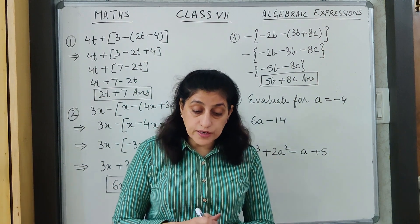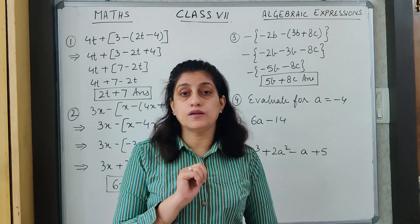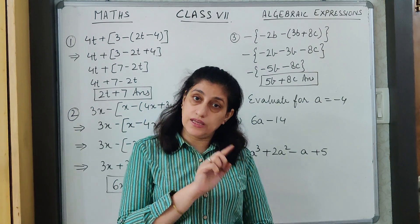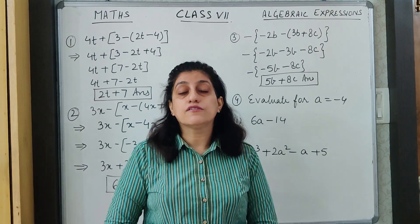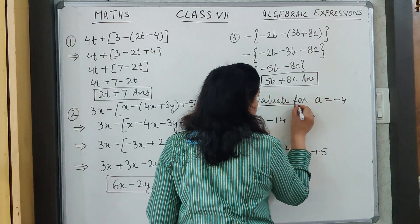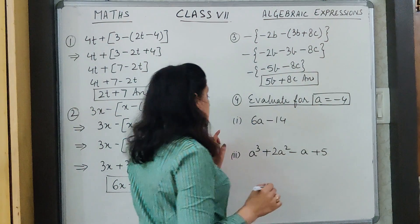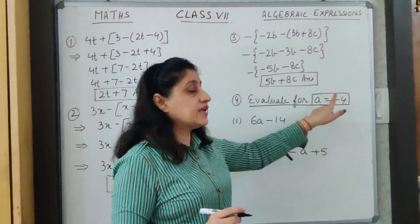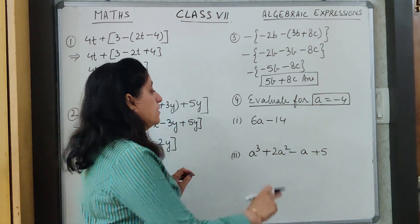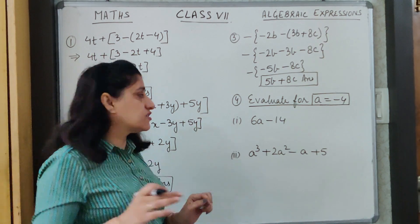Now we are moving on to a different type of question in which we place the value of the unknown variable. The value of the unknown variable will be given to us, and we place that value into the expression to get its value. For example: evaluate for A equals minus 4. The expression is 6A minus 14. Instead of A, I will use minus 4.